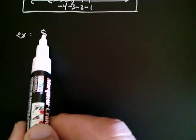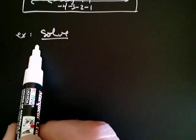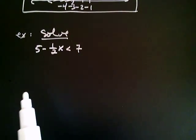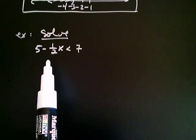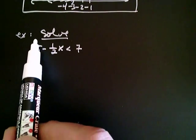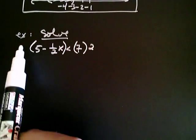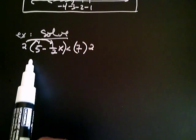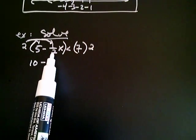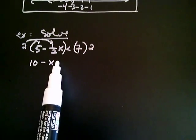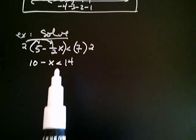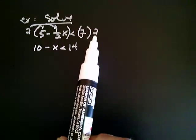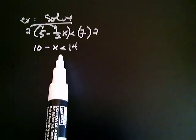Let's try another one. Say we wanted to solve: five minus one half x is less than seven. We have a fraction involved, so we can clear fractions by multiplying both sides by positive two. Distributing on the left: two times five is ten, and two times one half x is just x, giving ten minus x is less than fourteen. Notice that we did not change the direction of the inequality sign, because we multiplied both sides by a positive two. You only change the direction when you multiply or divide by a negative number.